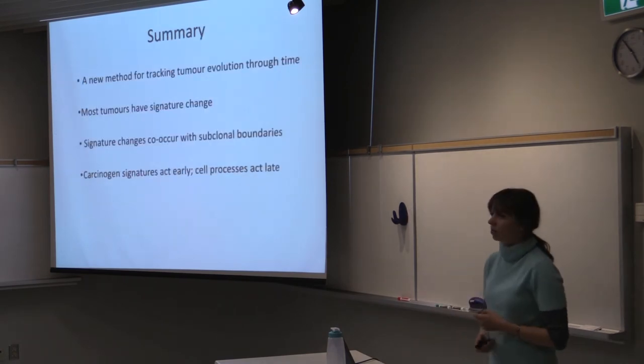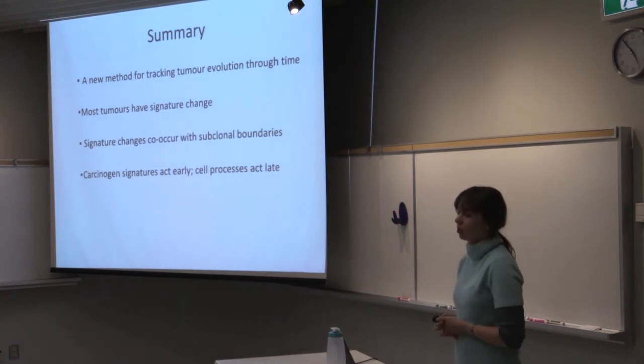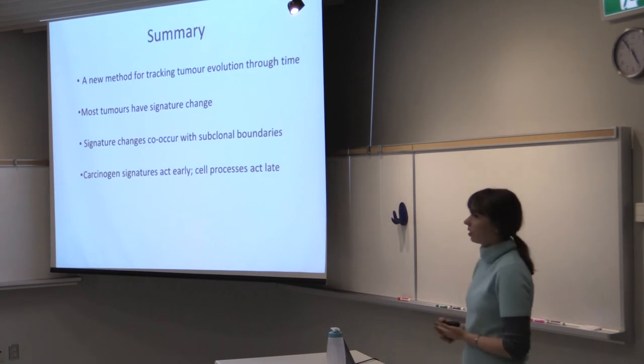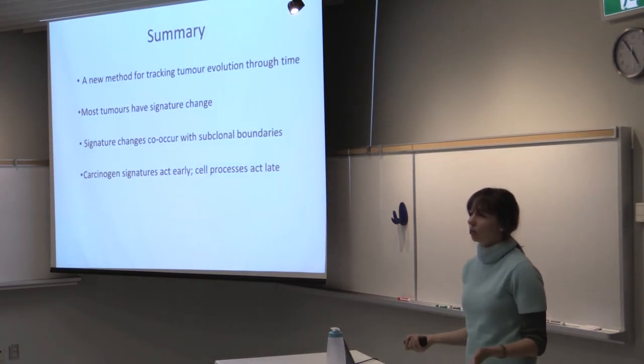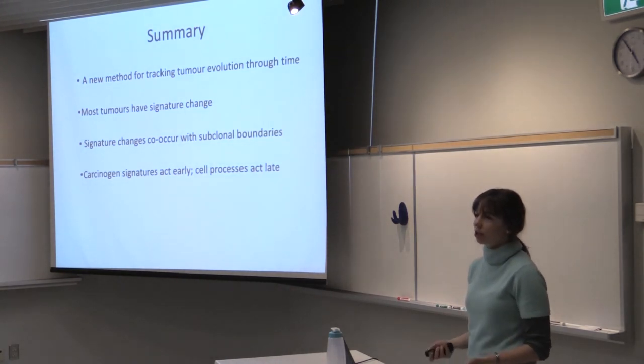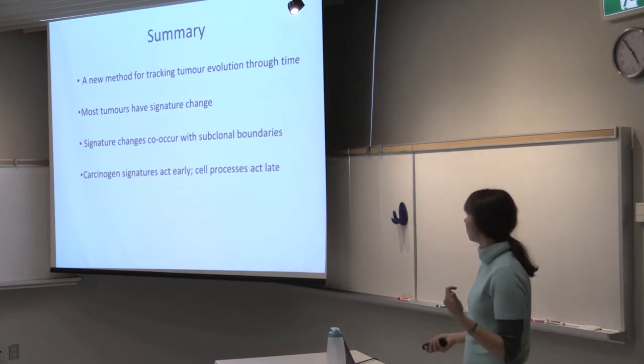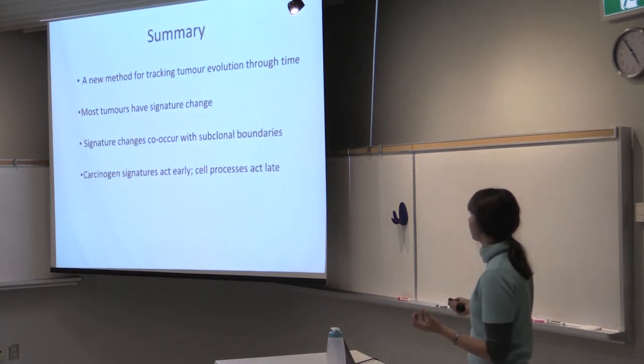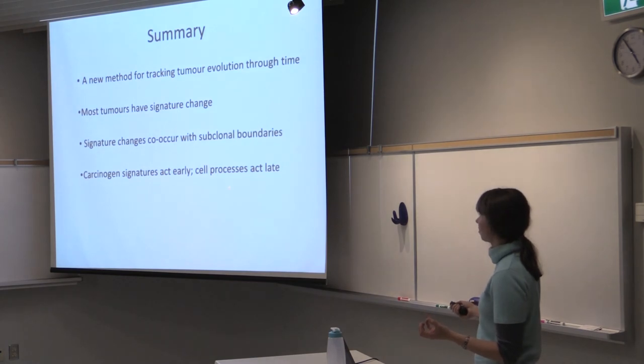To summarize, we present a new method to track tumor evolution over time using mutational signatures. And we observe that most tumors have a signature change. Those changes co-occur with the clonal sub-clonal transitions, and also the signatures that act early are going to be carcinogens, and those that are late are mostly cell processes.